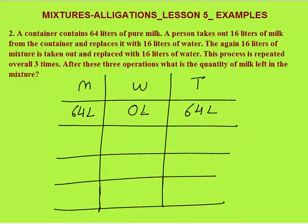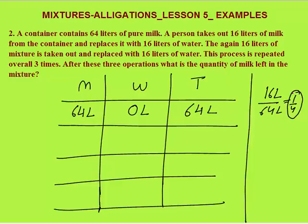16 liters is what part of total? Total solution is 64 liters, so 16 liters is one-fourth of total. We have withdrawn one-fourth of total solution. As discussed before, once you withdraw one-fourth of total, one-fourth of milk will be out, so you are left with three-fourths of milk — that is three-fourths of 64.